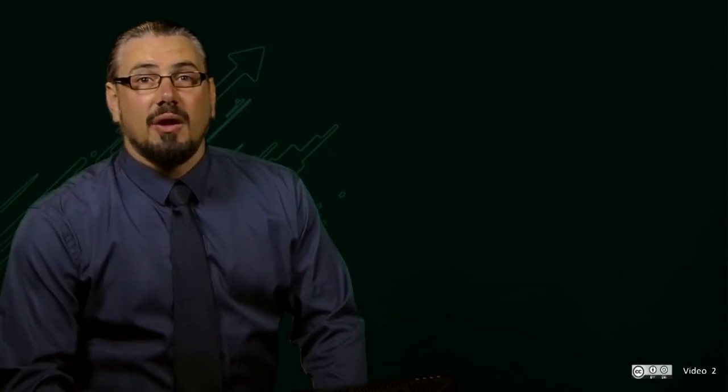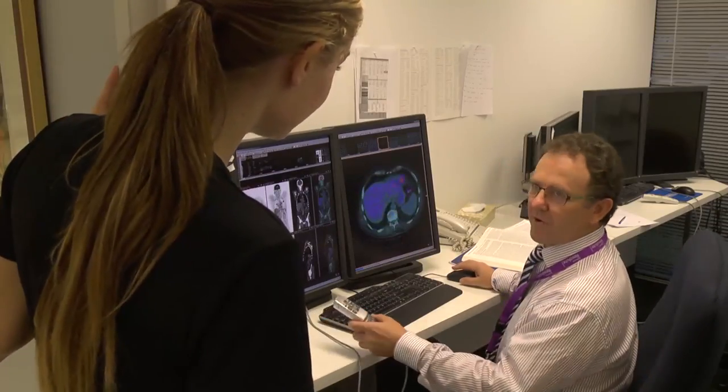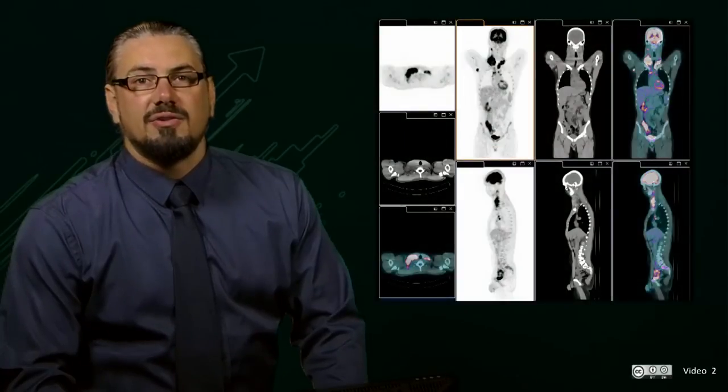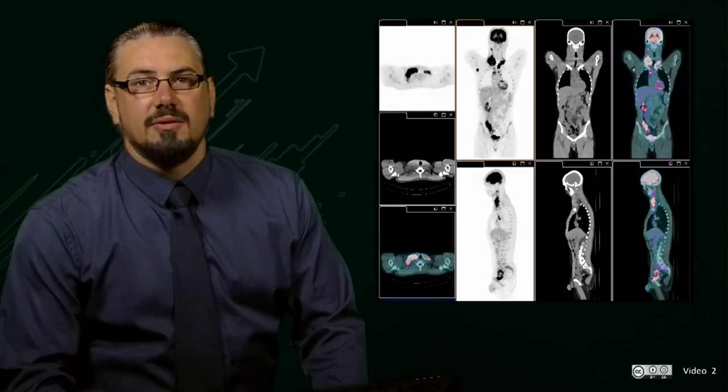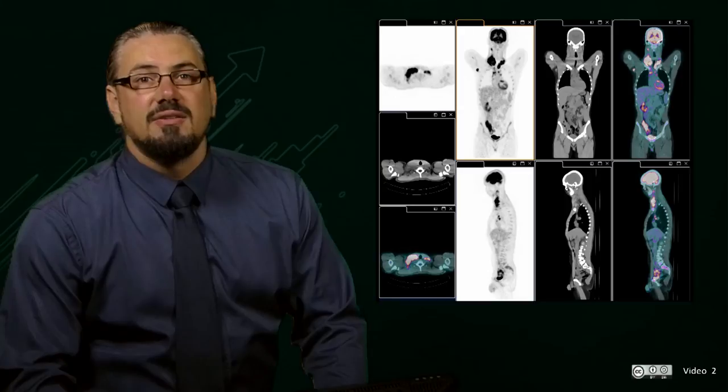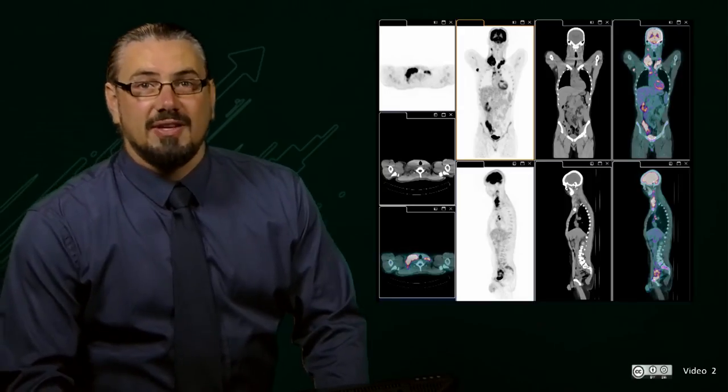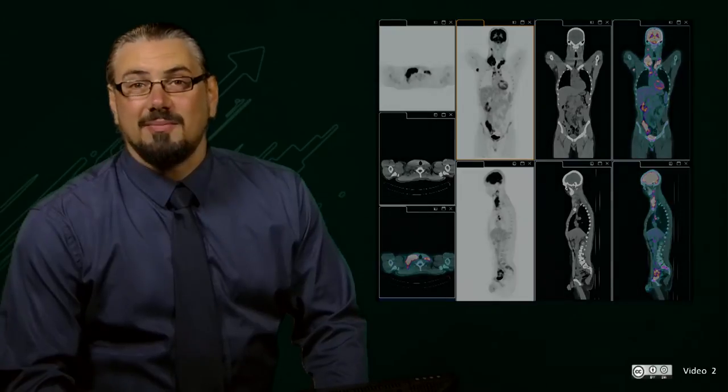The images acquired during the scan are reconstructed to appear as multiple slices, as three-dimensional images, and as fused images where the PET and CT image are combined to give information on function and structure within the patient. The clinician uses these images to assess disease such as cancer and provides a report of the findings of the PET CT scan to assist with patient management.